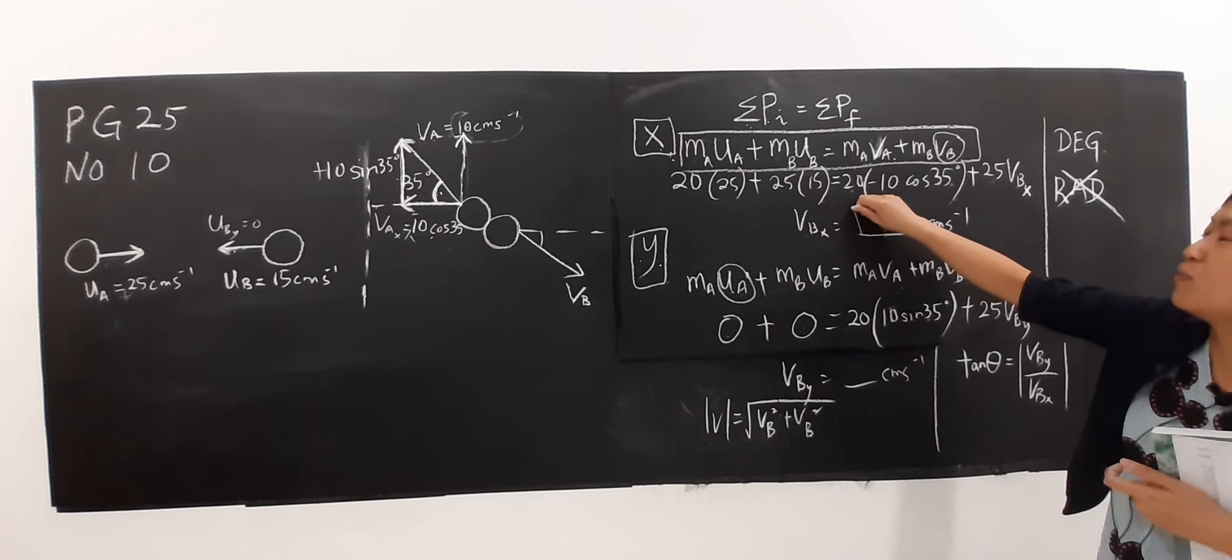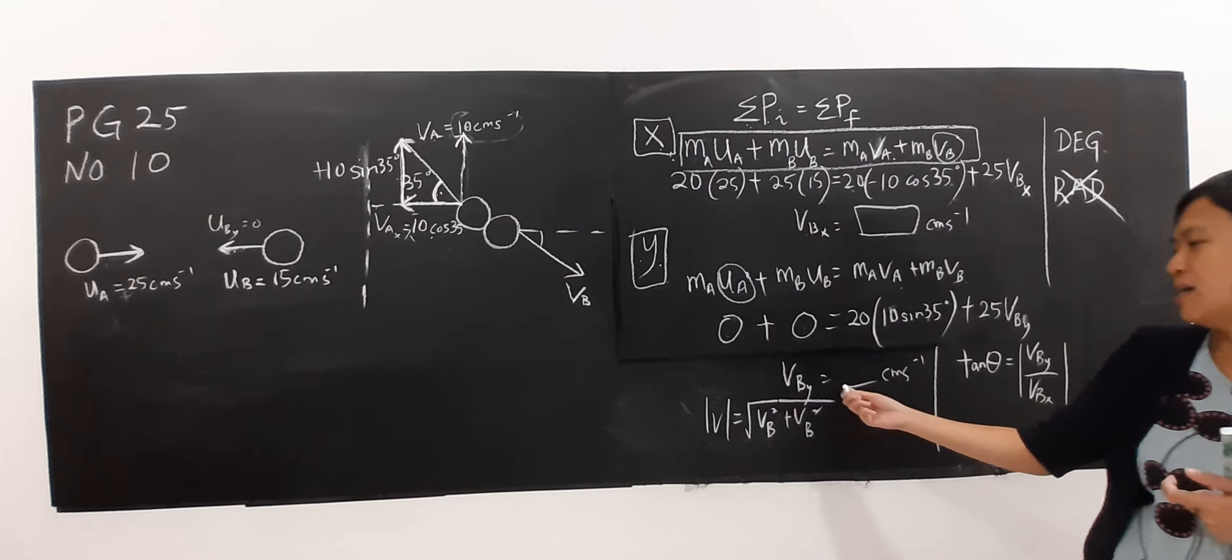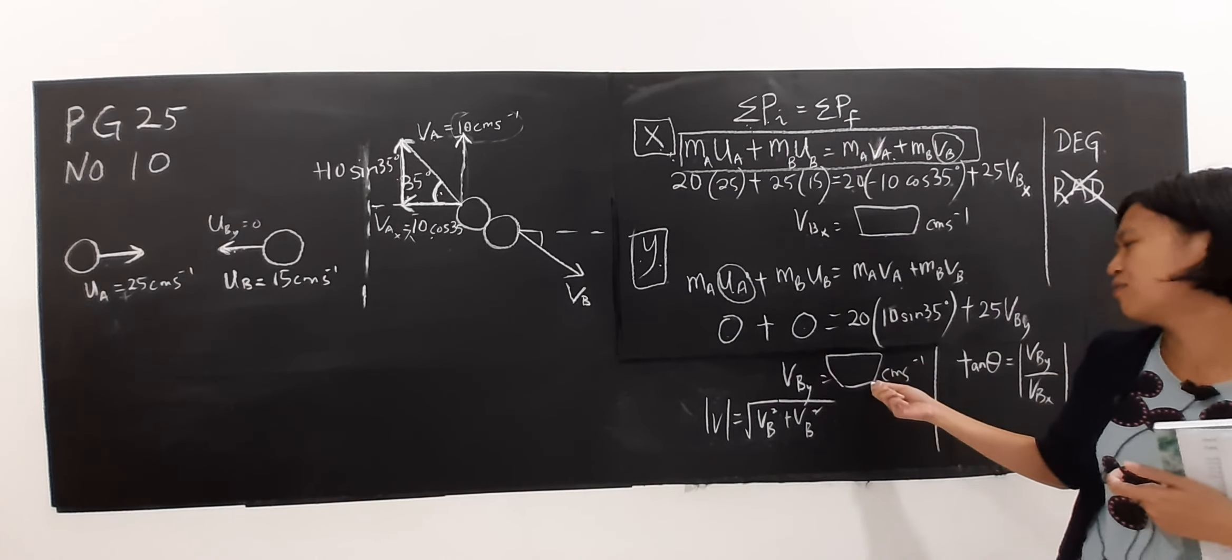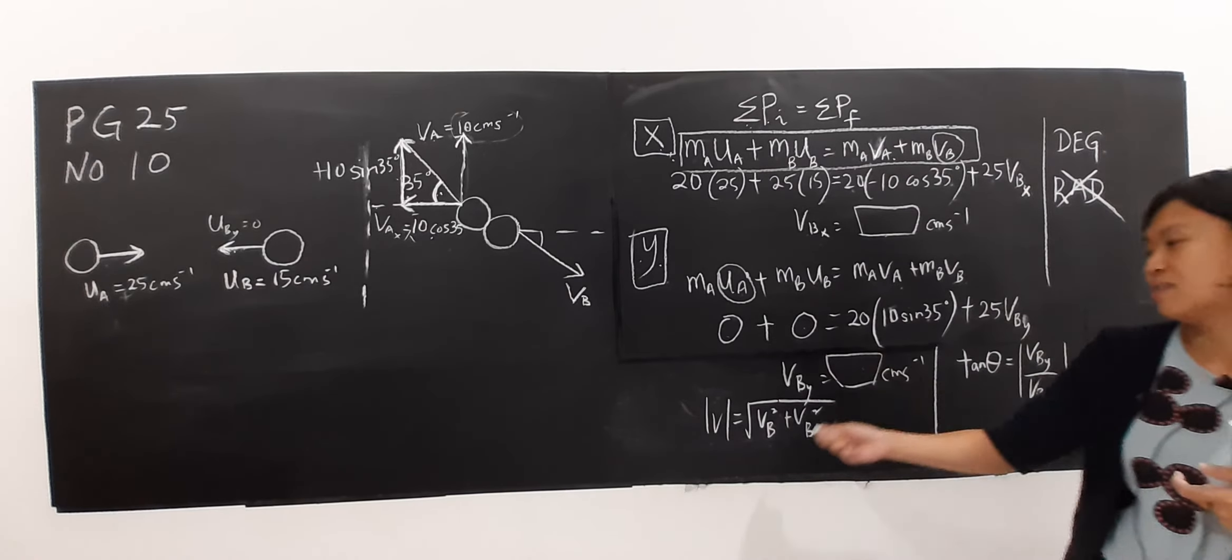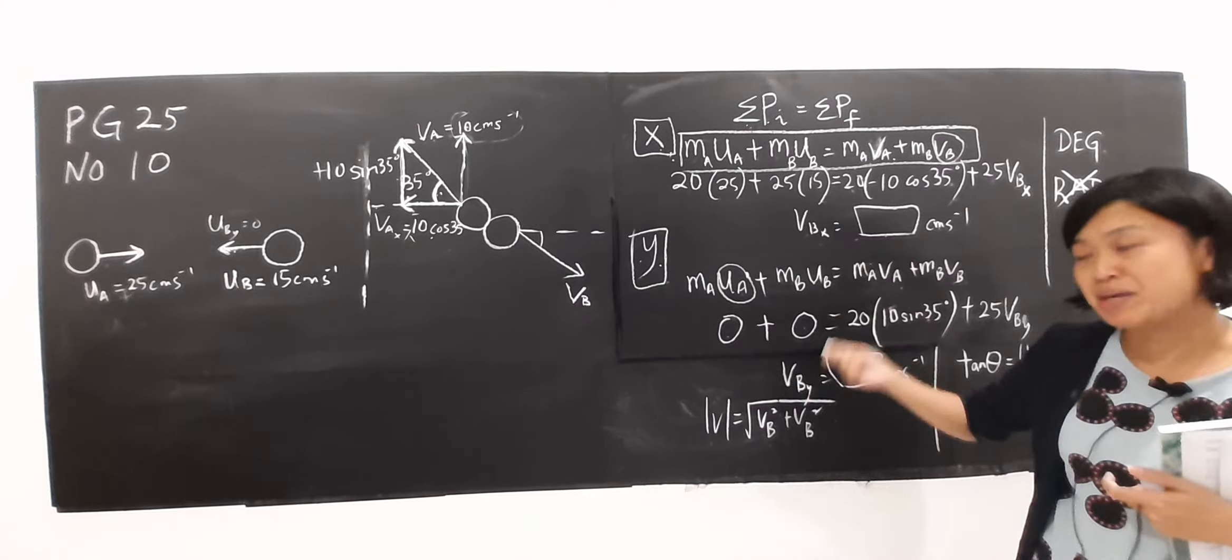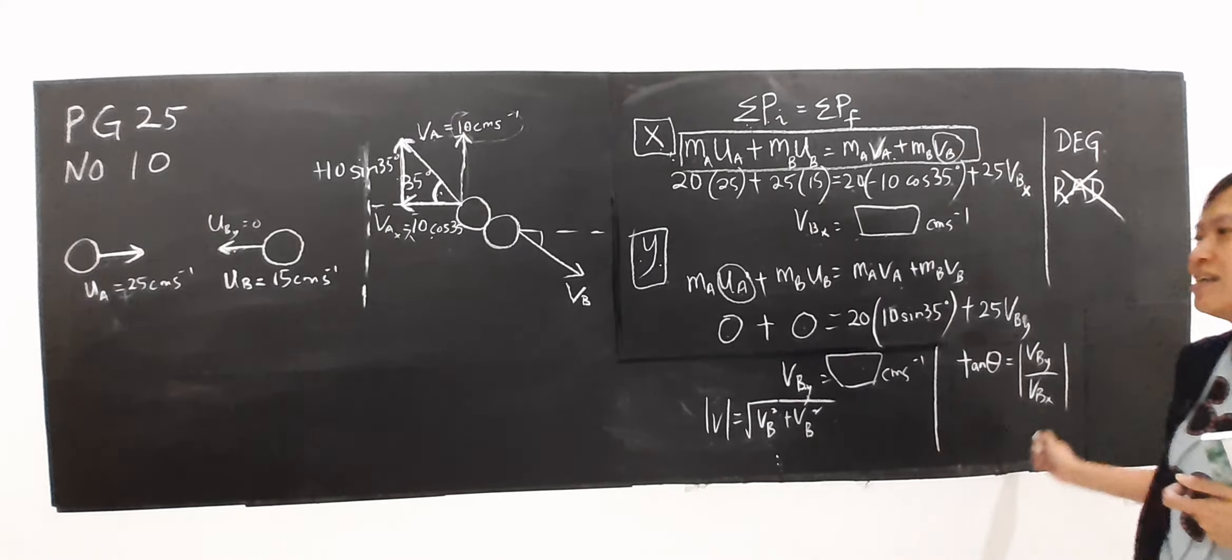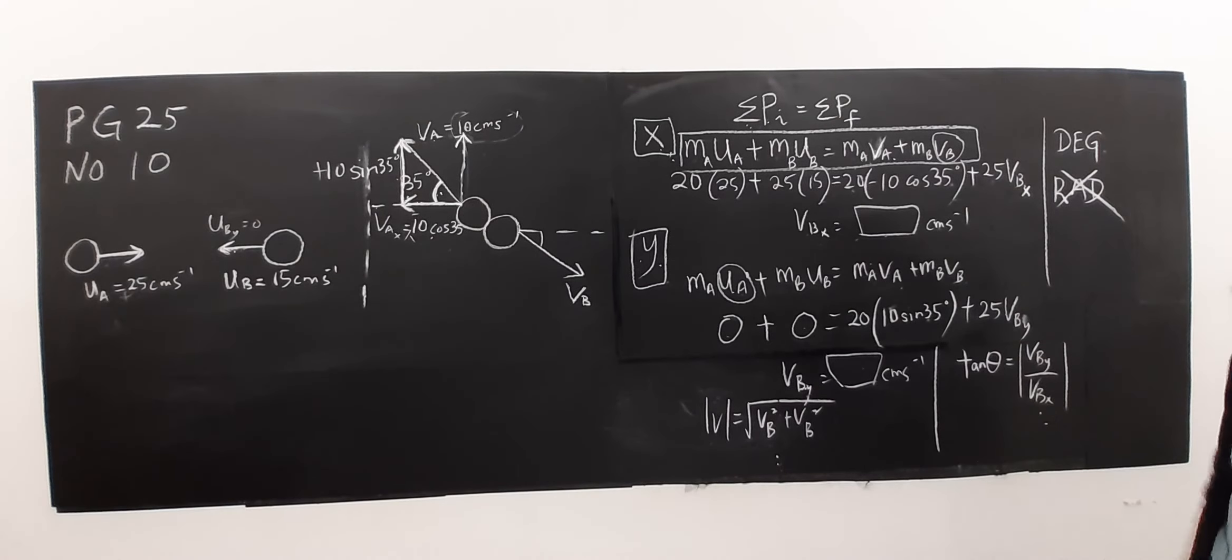For the value, you try to substitute it in yourself. Substitute the value of VBX and VBY in here and get the value of theta.